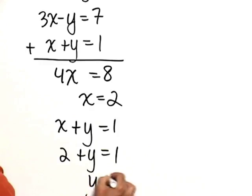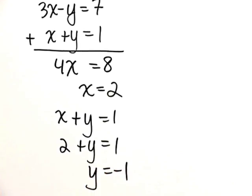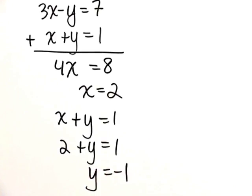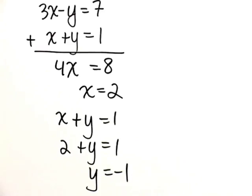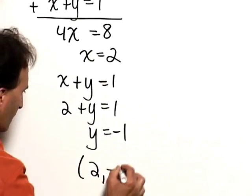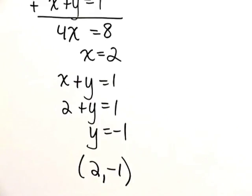Subtracting 2 from both sides, we find that y is equal to negative 1. So our solution then is the point 2 comma negative 1.